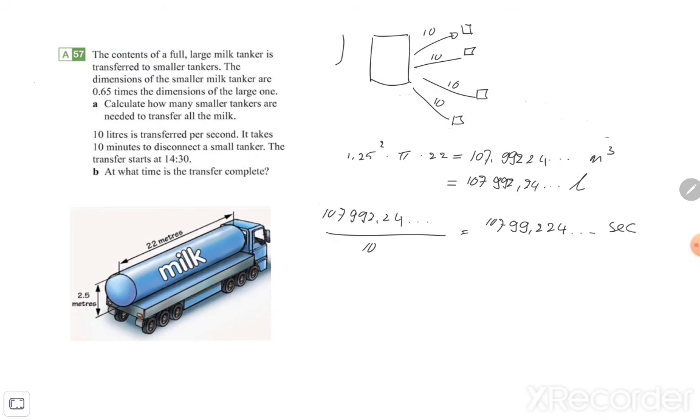If I need to have the answer in minutes, we're gonna divide it with 60. So leave your answer in your calculator, because then you can go. So that's 179.987 etc., so approximately 180 minutes. And 180 minutes is also 3 hours.